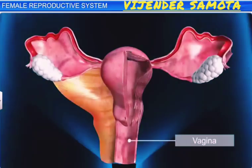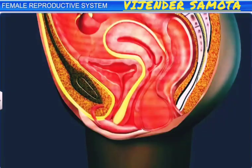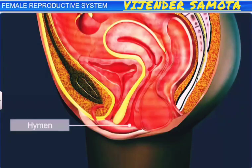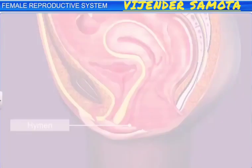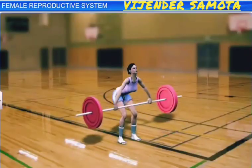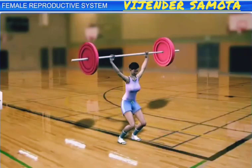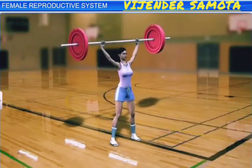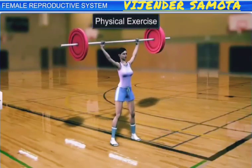The vagina is a muscular tube starting from the lower end of the uterus up to the outside. The opening of the vagina in young females is partially covered by a thin membrane called the hymen. The hymen is frequently ruptured in childhood due to strenuous physical exercise.